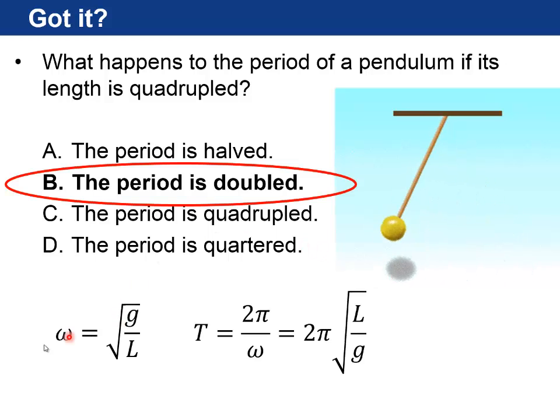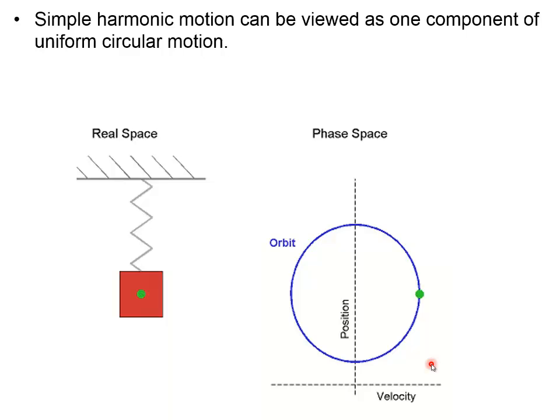Answer is doubled. So remember omega is the square root of g over L. So the period is 2 pi over omega, so that's 2 pi times the square root of L over g. So if L goes up by a factor of 4, the period goes up by a factor of square root of 4, so doubles. Longer pendulum swings slower.